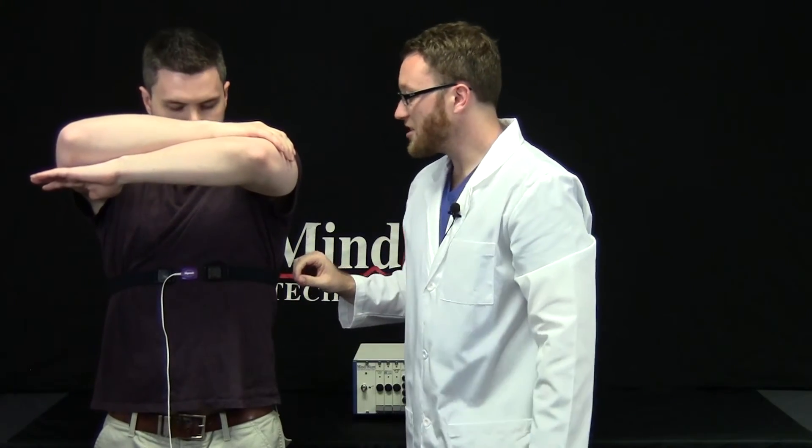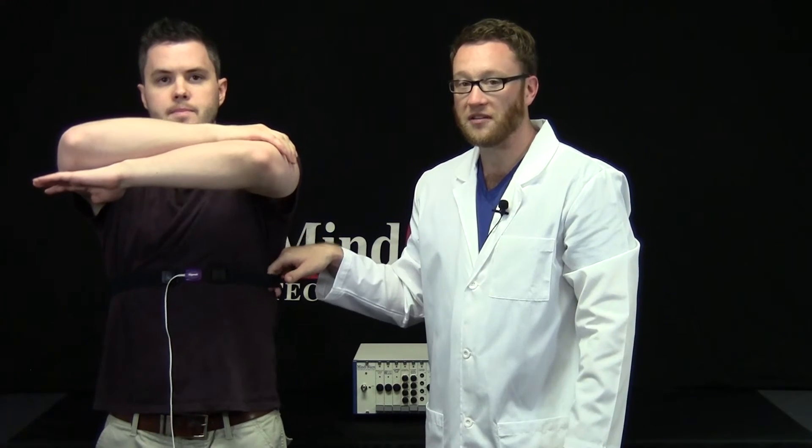The belt should be just snug enough that you can fit two fingers between it and the subject. And if the subject is wearing impedance cardiography leads, be sure that the belt is not putting tension on the lead wires.